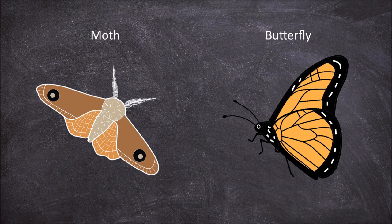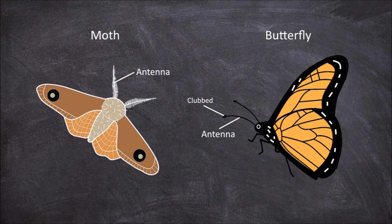The biggest difference and most useful for identification is the difference in antennal structure. Butterflies possess clubbed antennae, whereas moth antennae are not, and are often comb-like or feathery in appearance.